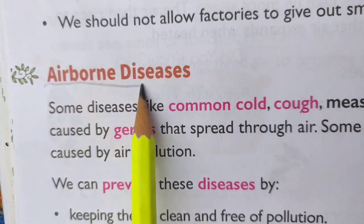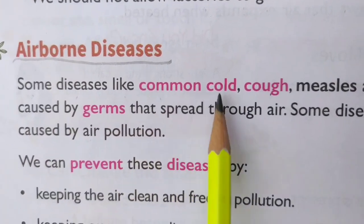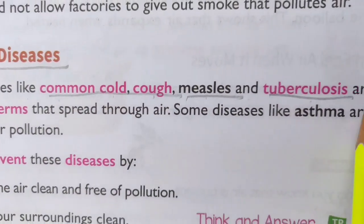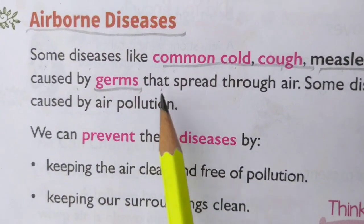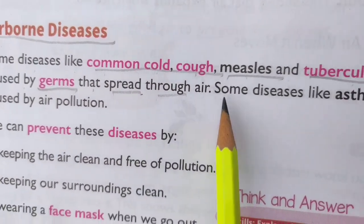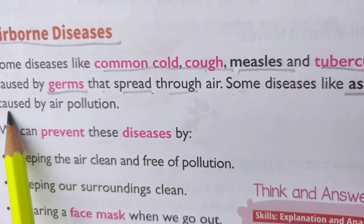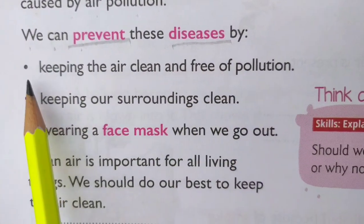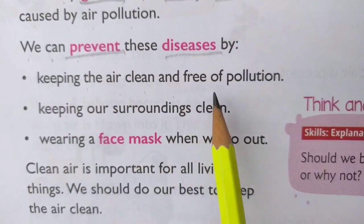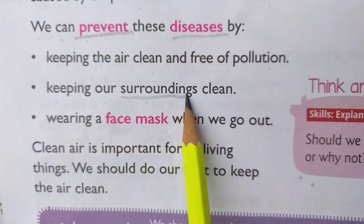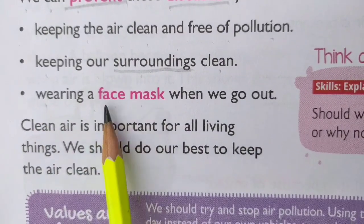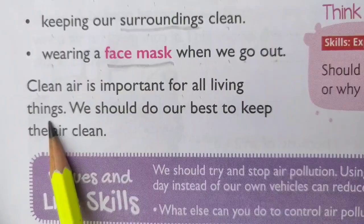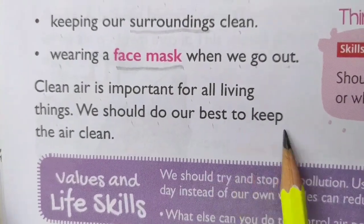Airborne diseases: Some diseases like common cold, cough, measles and tuberculosis are caused by germs that spread through air. Some diseases like asthma are caused by air pollution. We can prevent these diseases by keeping the air clean and free of pollution, keeping our surroundings clean, wearing a face mask when we go out. Clean air is important for all living things. We should do our best to keep the air clean.